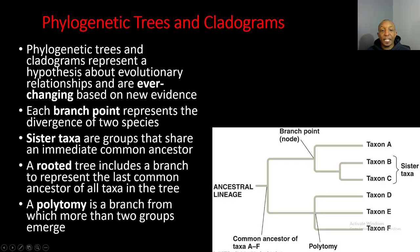Phylogenetic trees and cladograms represent a hypothesis about evolutionary relationships and are ever-changing based on new evidence. As we discover new organisms and new creatures, these organisms have different features that make them separate or different from other organisms, so our phylogenetic trees and cladograms adjust and evolve accordingly. Each branch point represents a divergence of two species.